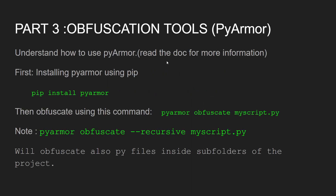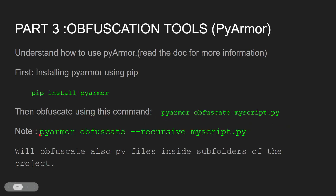To understand how to use PyArmor, you need to read the documentation for more information. But first, install PyArmor using pip: pip install PyArmor. Then, obfuscate using the command: PyArmor obfuscate myscript-pumppy. Note, you can also use PyArmor obfuscate recursive myscript-pumppy.